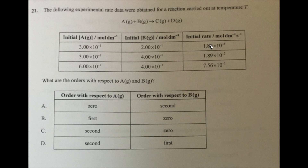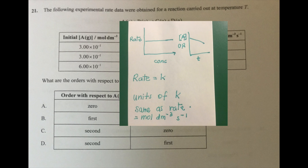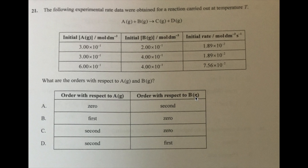This suggests that when you change B by increasing its concentration, it has no effect on the rate of the reaction. When you have that situation, you have a graph that looks like this, a rate expression that looks like this, and units of K that look like this. The order of the reaction with respect to B would be zero order, because all of those characteristics — the graph, the units, and the rate law — all match a zero order reaction, where changing the concentration brings about no change in the rate.